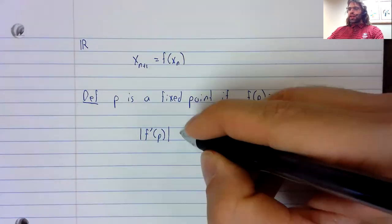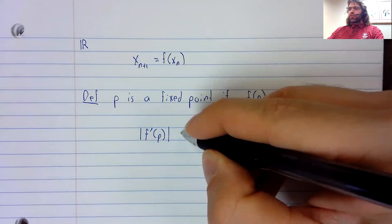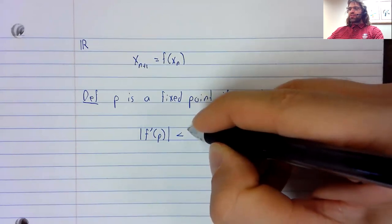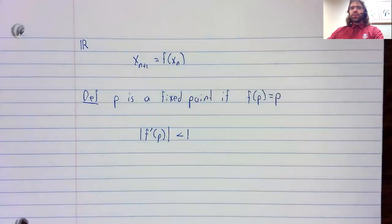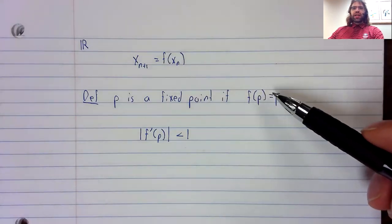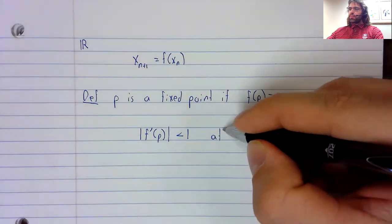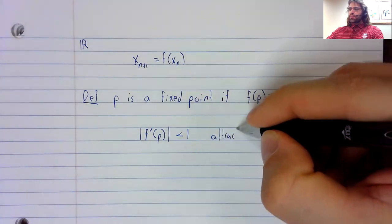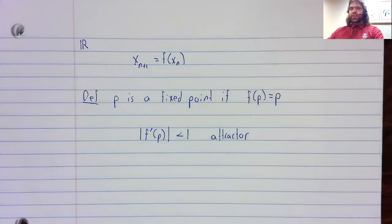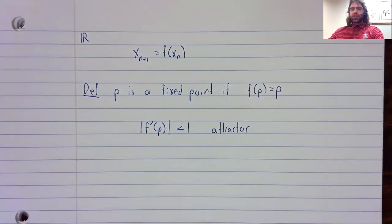If the absolute value of the derivative is less than one, then this fixed point is asymptotically stable. We call it an attractor.